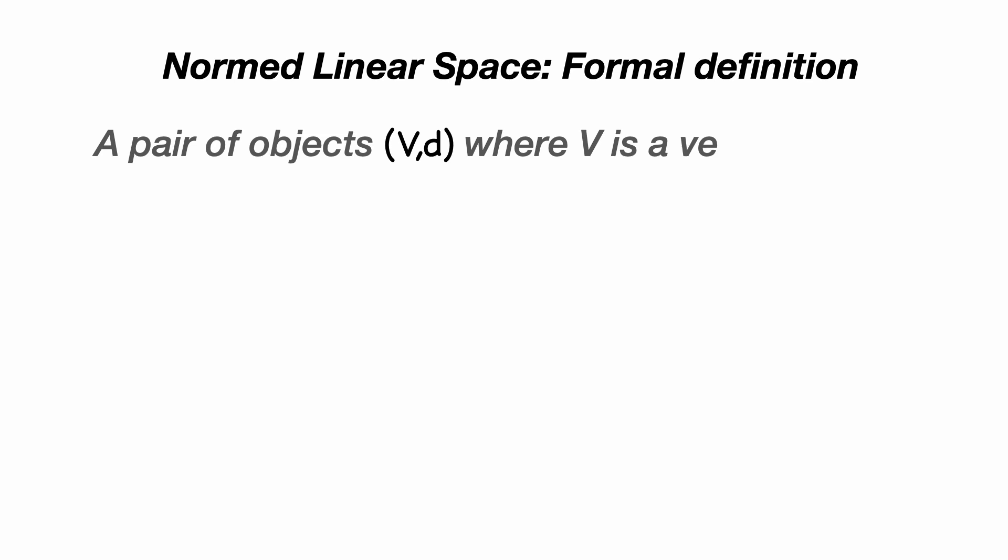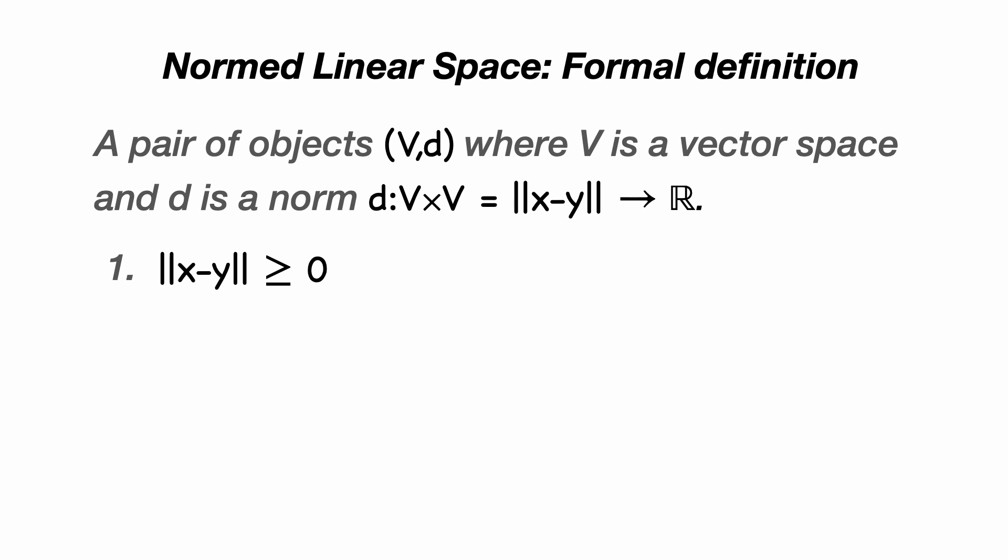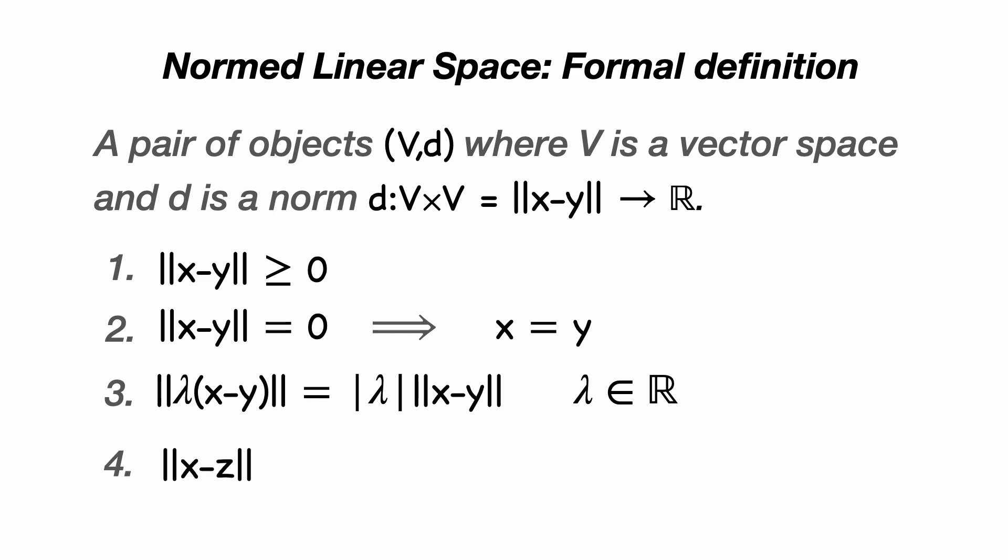Now just like in a metric space, the norm has to satisfy four criteria in order to qualify this set as a normed linear space. Firstly, the norm of a vector must be greater than or equal to zero. Secondly, the norm of X minus Y equals zero implies that X equals Y. Thirdly, if we multiply the vector X minus Y by some constant scalar lambda and we take the norm of that, then that's equal to the absolute value of the scalar lambda multiplied by the norm of X minus Y. The fourth and final property is that the norm must satisfy the triangle inequality. So the norm of X minus Z is less than or equal to the norm of X minus Y plus the norm of Y minus Z.